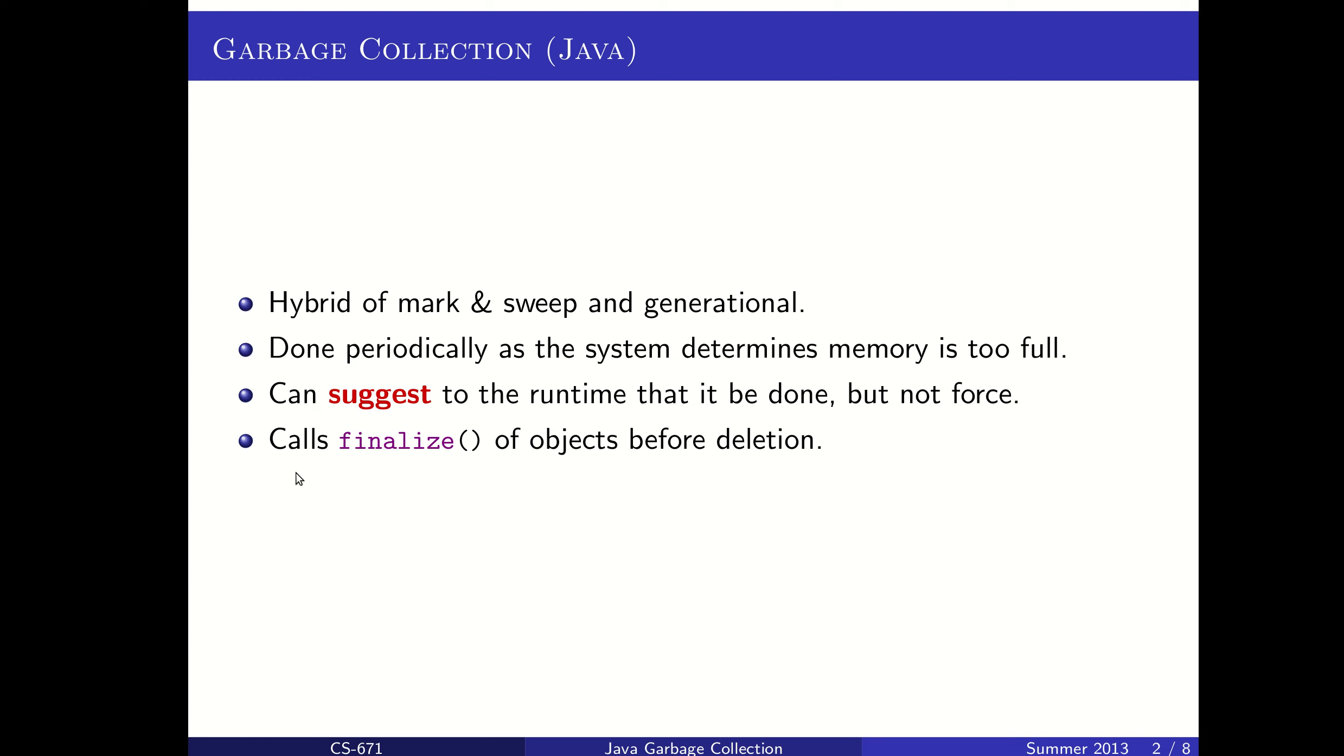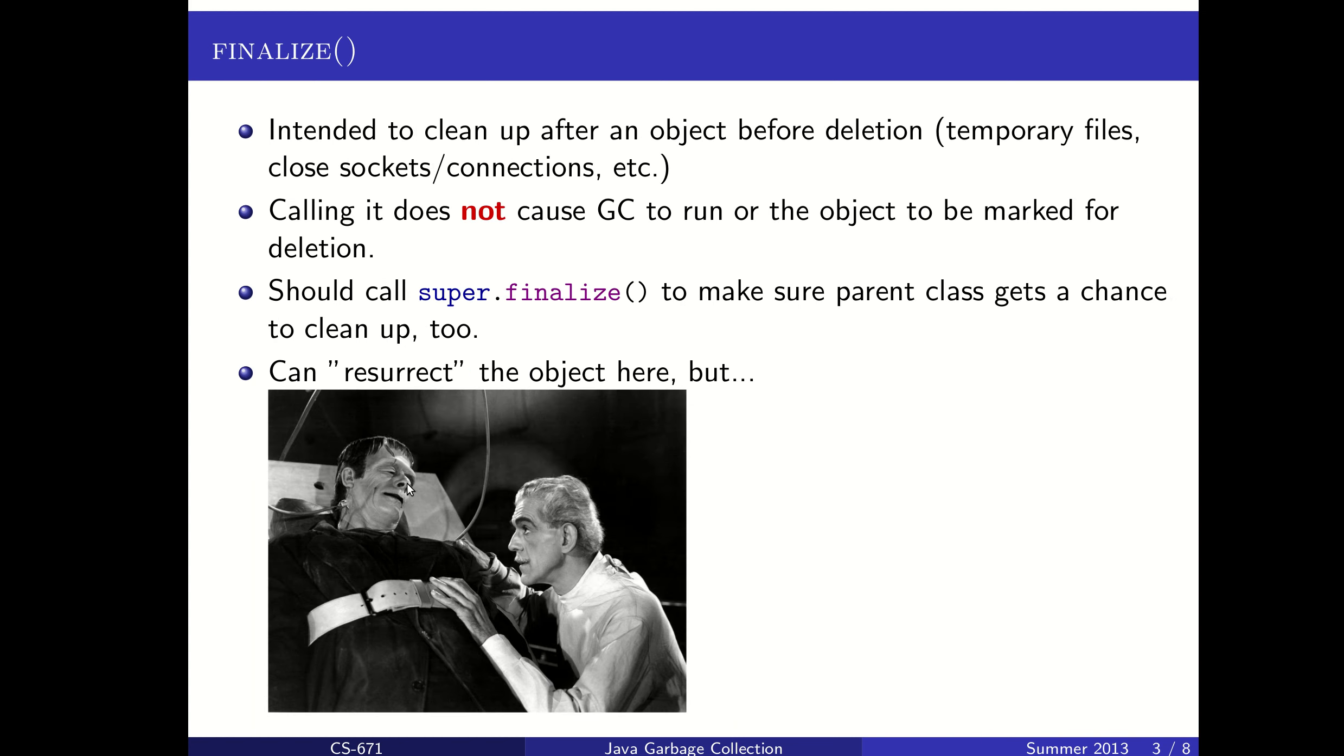The garbage collection scheme calls a method called finalize on objects before they get deleted. This is where we can do cleanup of whatever things need cleaned up in our objects. If we had some files, some temporary files we had created for that object, then we should make sure to delete them there. If we have some network connections or logins or something like that, that we want to make sure get gracefully closed, we would do that in a finalize method. Calling finalize on an object does not tell the garbage collector to delete it. It would just do whatever steps are in the finalize method. So again, we cannot force the garbage collector to delete this object the way that in C or C++ we can force memory to be deallocated. You should always call super.finalize to make sure that any parent classes get a chance to clean up their data too.